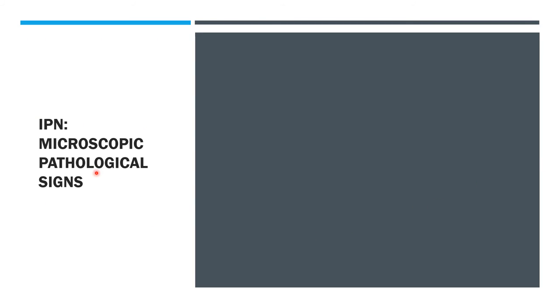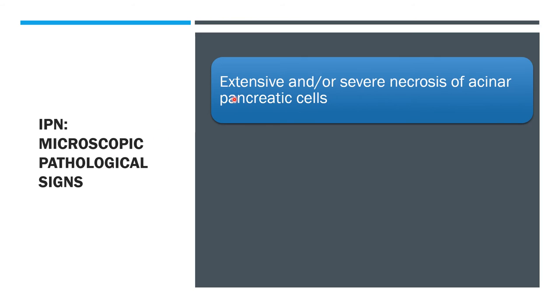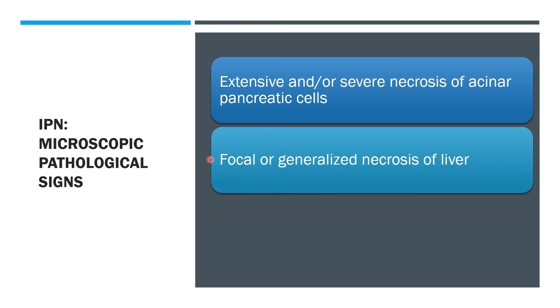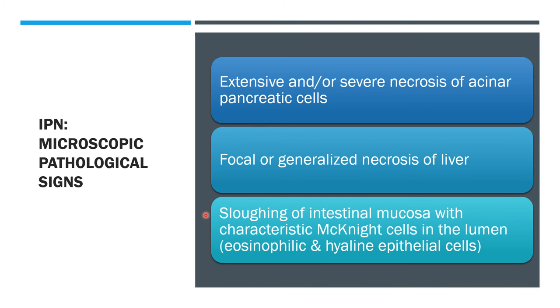For the microscopic pathological signs, these include extensive and severe necrosis of the acinar pancreatic cells, focal or generalized necrosis of the liver, and sloughing of the intestinal mucosa with characteristic cells in the lumen, including eosinophilic and hyaline epithelial cells.